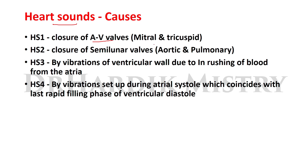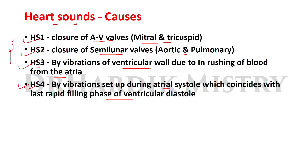Causes of heart sounds: heart sound one is due to closure of atrioventricular valves — mitral and tricuspid. Heart sound two is due to closure of semilunar valves — aortic and pulmonary. Heart sound three is caused by vibrations of the ventricular wall due to in-rushing of blood from the atria. Heart sound four is due to vibrations set up during atrial systole, coinciding with the last rapid filling phase of ventricular diastole.